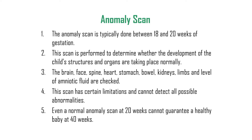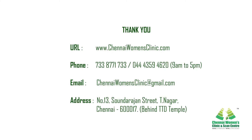To summarize, the anomaly scan is typically done between 18 to 20 weeks of gestation. The scan is performed to determine whether the development of the baby's structures and organs are taking place normally. The brain, face, spine, heart, stomach, bowel, kidneys, limbs, and the level of amniotic fluid are all checked. The scan has certain limitations and cannot detect all possible abnormalities. Even a normal anomaly scan at 20 weeks cannot guarantee a healthy baby after birth. For more information, visit our website at www.ChennaiWomansClinic.com. Thank you for joining us!